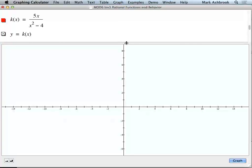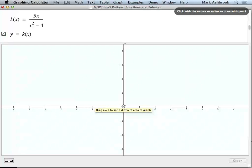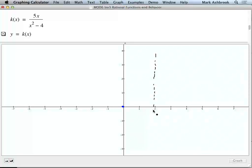So k is 5x over x squared minus 4. What were our roots? We had a root at 0, that was also the y-intercept. And we have vertical asymptotes at 2 and negative 2. That's our only root. That's our y-intercept.